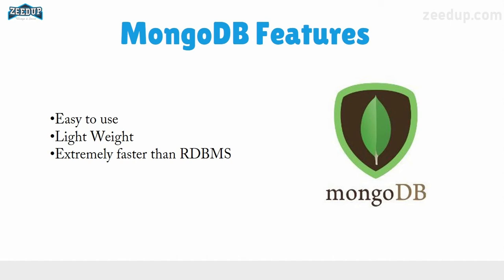Some key features of MongoDB: it is easy to use since data is stored in a document-like format, so you don't need deep knowledge of a query language. Basic computer knowledge and a basic OOP concept is sufficient to work with MongoDB data. It is light in weight — its size is smaller compared to RDBMS — and it is extremely faster than RDBMS, mainly because there are no joins and no concept of relations, so no definite structure is needed to store data.